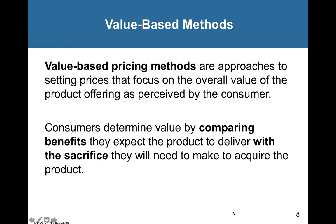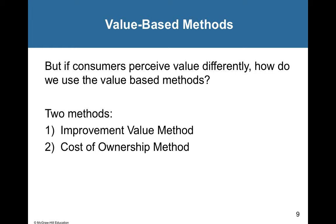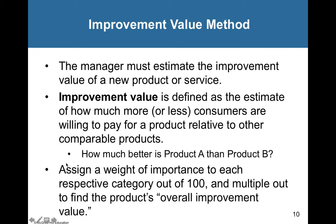We also have what we call value-based pricing methods, and these are really fun. This is where we set prices that really focus on the overall value of the product from the eyes of the consumer. We determine this value by comparing our benefits with the sacrifice consumers need to make to acquire the product. Two methods of value-based pricing are the improvement value method and the cost of ownership method. Starting with improvement value, we look at an estimate of how much more consumers are willing to pay for a product relative to another comparable product.